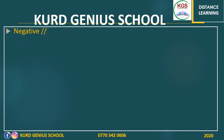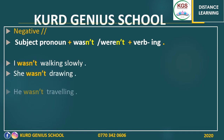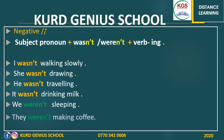When my sentence is negative, I have the same rule but I simply add 'n't' or 'not' to 'was' or 'were', making 'wasn't' or 'weren't'. For example: I wasn't walking slowly. She wasn't drawing. He wasn't traveling. It wasn't drinking milk. We weren't sleeping and they weren't making coffee.